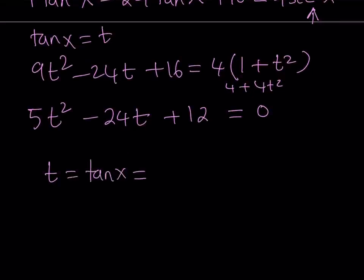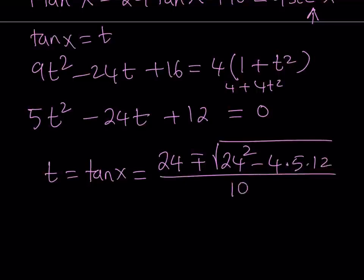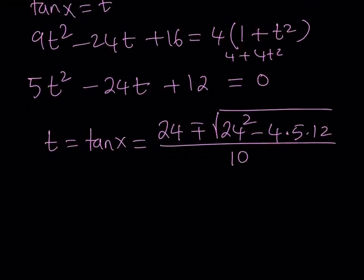That equals negative b, which is 24, plus minus the square root of b squared, which is 24 squared, minus 4 times 5 times 12, divided by 2 times a, which is 10. Let's simplify the discriminant first. And then we can plug it in.